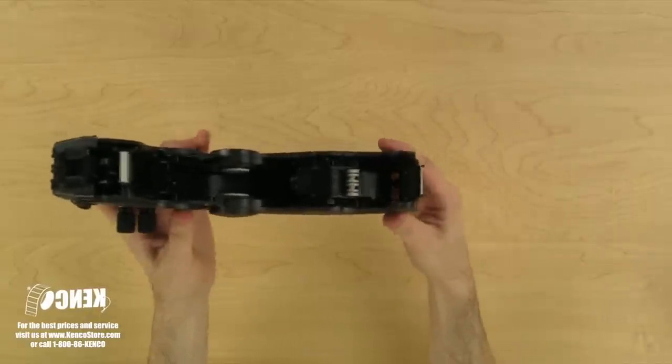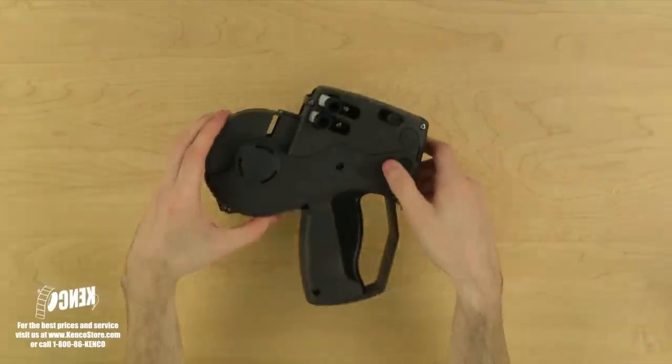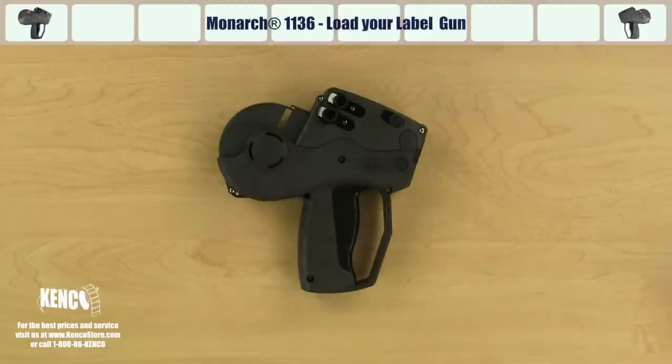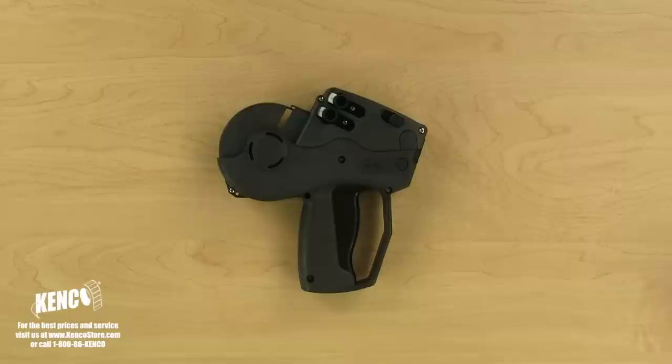It's important to note that the print location on the Monarch 1136 series cannot be adjusted. Now that we are more familiar with the various components, let's learn how to quickly and properly load the Monarch 1136 series labeler.